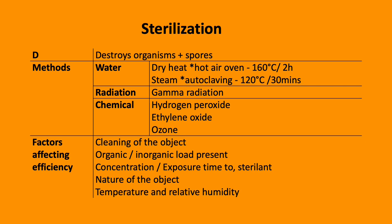Sterilisation also removes spores and can be done in one of three ways: by dry heat in a hot oven at 160 degrees over 2 hours; steam via autoclaving at 120 degrees C over 30 minutes; or radiation with gamma radiation, or chemical agents including hydrogen peroxide, ethylene oxide and ozone. Factors affecting sterilisation efficiency include the cleaning of the object, the organic load, the concentration and exposure time of the sterilant, the nature of the object, and the temperature and relative humidity.